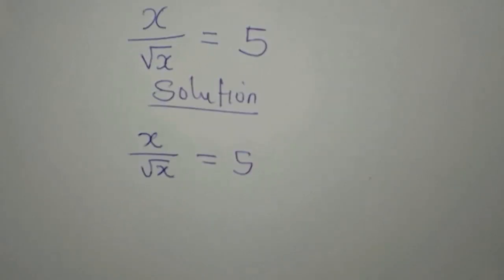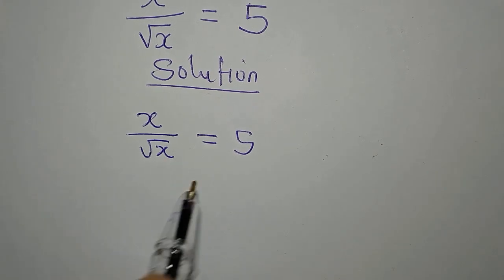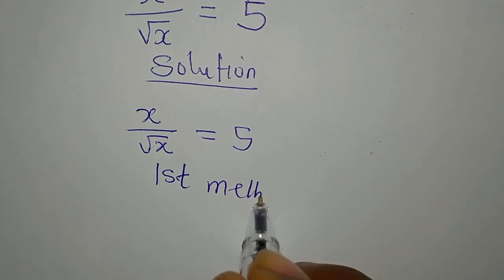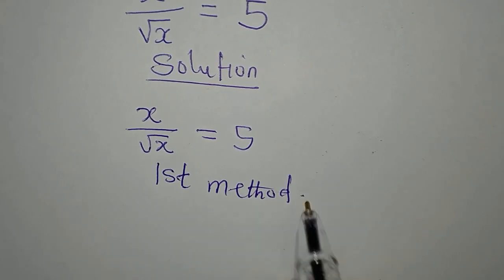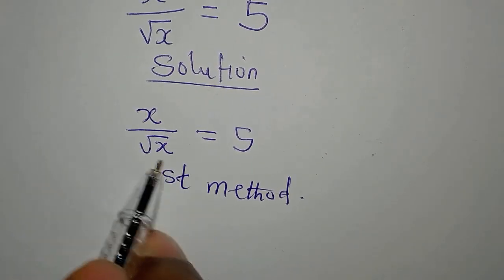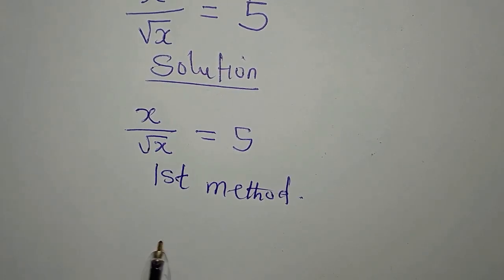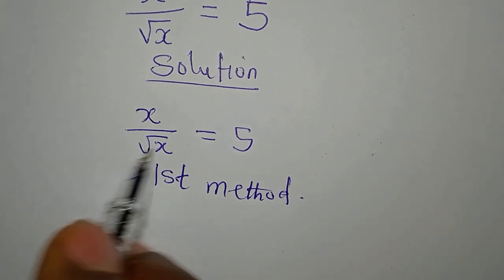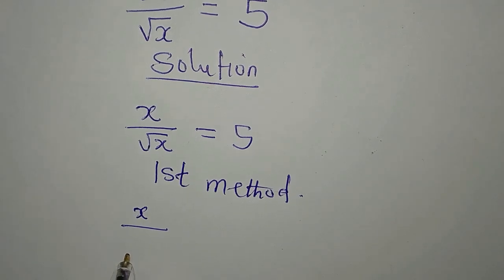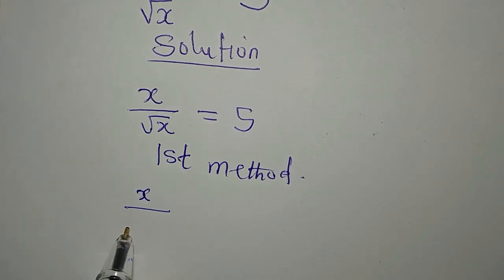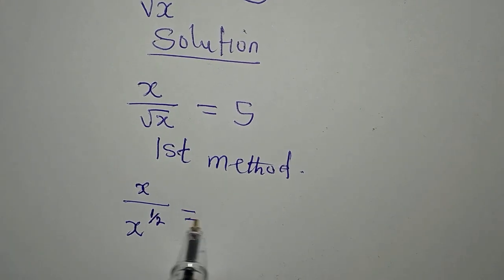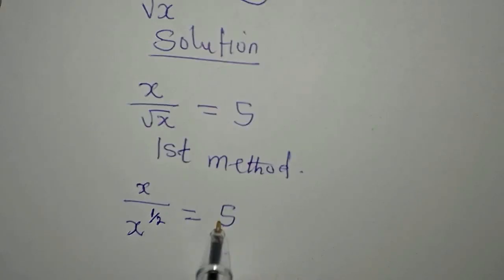Now I want to do this in two ways. Let's look at the first method. From the first method, I would like to break this into two. This is x over square root of x, which is the same thing as x to the power of 1 over x to the power of 1/2. So this will be equal to 5 on the right.